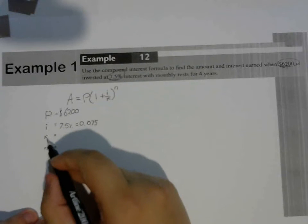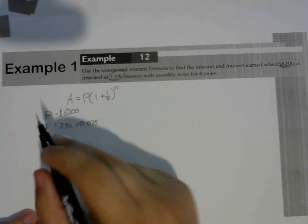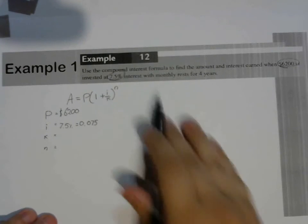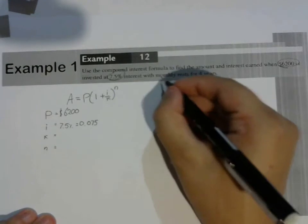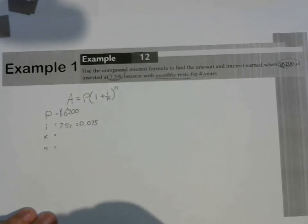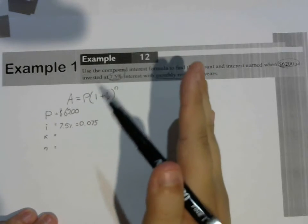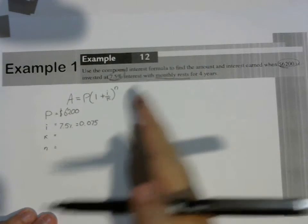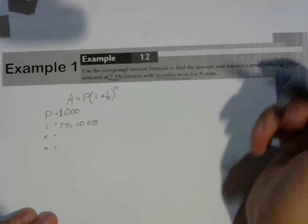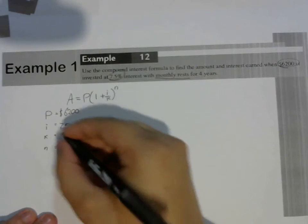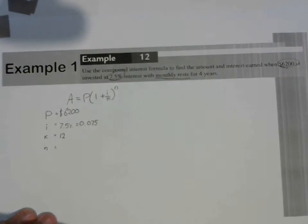K is the number of rests per year. We have monthly rests, which means one payment per month. In one year, we've got 12 months. So we're going to have 12 payments per year, which is what K is. So K is going to be 12 for monthly.